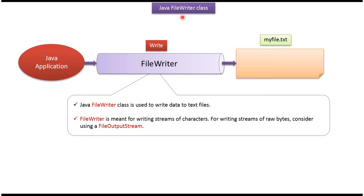In this video tutorial, I will cover the FileWriter class. Here you can see myfile.txt and a Java application. A Java application can use FileWriter to write data to text files. FileWriter is meant for writing streams of characters. For writing streams of raw bytes, we should consider using FileOutputStream.